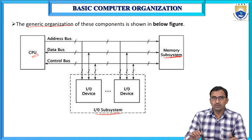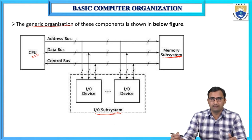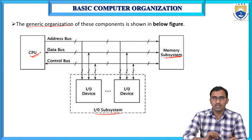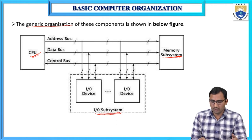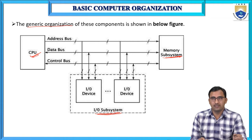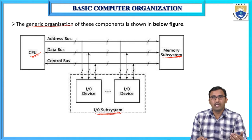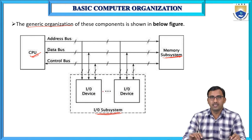The memory subsystem stores the programs that are executed by the CPU, along with the program's data. Mainly, the memory subsystem is used to store programs as well as the data corresponding to the program. The I/O subsystem contains multiple I/O devices — input or output devices. The I/O subsystem allows the CPU to communicate with the different input or output devices. We have seen three different buses: address bus, data bus, and control bus.